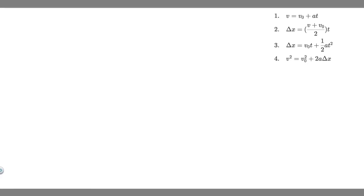In this problem, a small mailbag is released from a helicopter that is descending steadily at 1.5 meters per second. After two seconds: a) what is the speed of the mailbag, b) how far is it below the helicopter, and c) what are your answers to parts a and b if the helicopter is rising steadily at 1.5 meters per second? Let's solve parts a and b first.